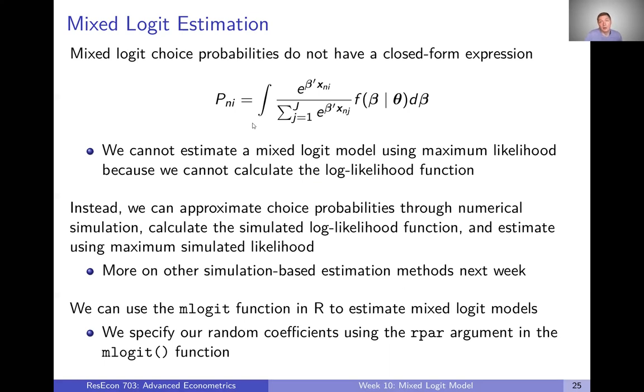And so you might think we can estimate this thing just like we estimated logit, nested logit, whatever. We just have this new formula for choice probabilities. And in some sense, you're right. In theory, that's what we could do, except this choice probability does not have a closed form expression. We are not going to be able to calculate it directly. And so we're not going to be able to use maximum likelihood estimation or even GMM in the ways we did in the past.